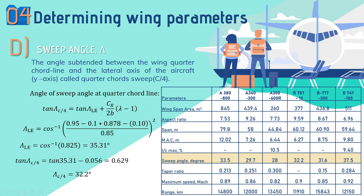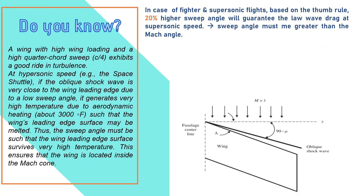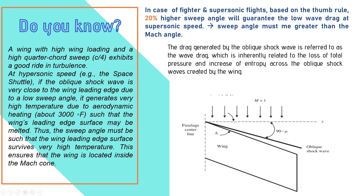For fighter aircraft, sweep angle helps reduce shock waves. As a thumb rule, 20% higher sweep angle guarantees lower wave drag at supersonic speed. The sweep angle must be greater than the Mach angle using the formula: μ = sin⁻¹(1/M). Once mu is found, substitute back: Λ = 1.290 − μ, and verify whether your design requirement is satisfied.